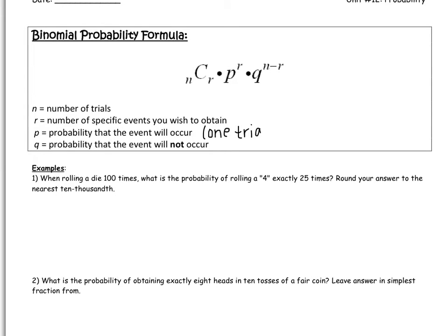Because when we take the probability that the event will occur, we take it based off of one event occurring. And the next piece is Q, where Q is the probability that the event will not occur. So what do I mean by all of this?